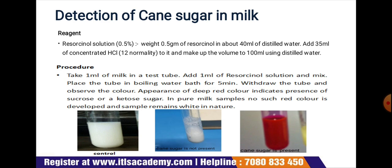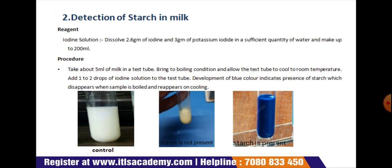As shown in the diagram, the first one is your control, the next one is the negative test where cane sugar is not present, and the third diagram shows the cane sugar presence — that is the adulterated milk.